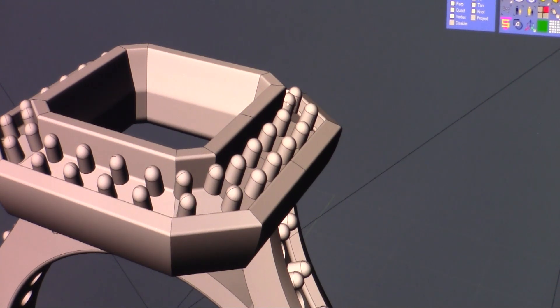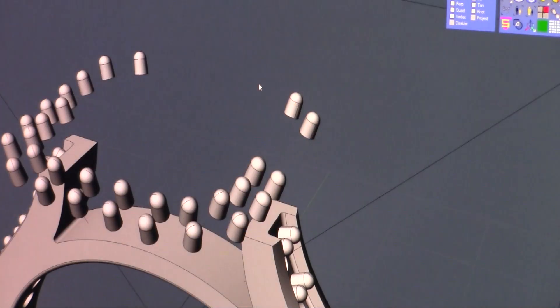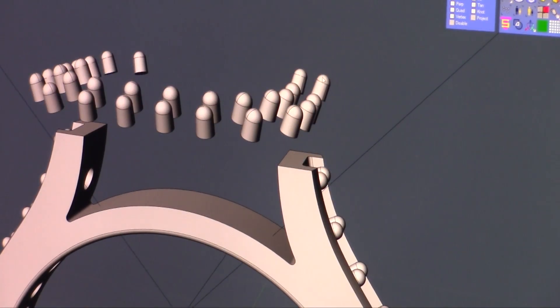We boolean these prongs to this top, but if we pick the top and hide it, you're going to notice some of the prongs weren't even boolean. That's because they did not intersect all the way through.